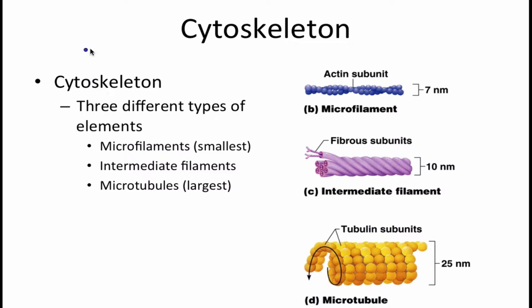The cytoskeleton supports the structure of the cell and has three major types of elements. The first are microfilaments — they are the smallest, made up of actin and myosin, about seven nanometers. Intermediate filaments are strong and stable and help form things like desmosomes. Then microtubules are the largest and determine the overall cell's shape.